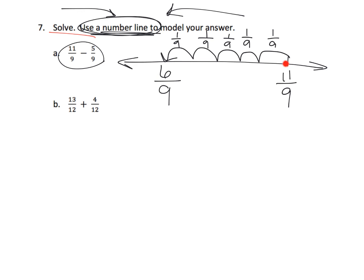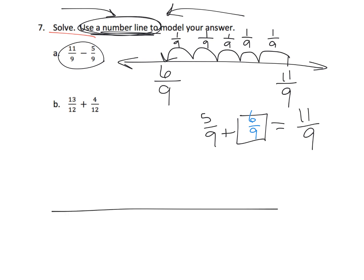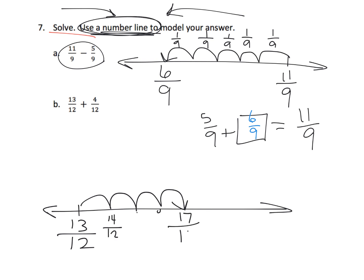We can count backwards from eleven-ninths — ten-ninths, nine-ninths, eight-ninths, seven-ninths, six-ninths — or think of it as an addition problem: five-ninths plus what gives eleven-ninths? The answer is six-ninths. The key is to record this on a number line. Then for thirteen-twelfths plus four-twelfths, we count up: fourteen-twelfths, fifteen-twelfths, sixteen-twelfths, seventeen-twelfths.